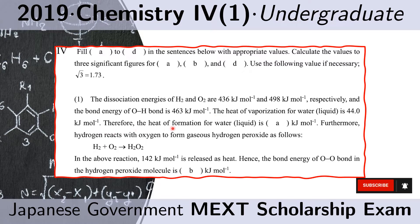Therefore, the heat of formation of liquid water is A kJ per mole. Furthermore, hydrogen reacts with oxygen to form gaseous hydrogen peroxide. In that reaction, 142 kJ per mole is released as heat. Hence, the bond energy of the O-O bond in the hydrogen peroxide molecule is B kJ per mole.